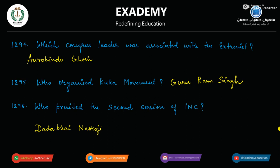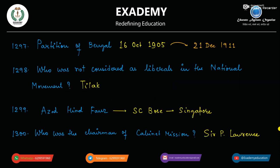Who presided over the second session of Indian National Congress? Dadabhai Naoroji. Partition of Bengal hua tha 16th October 1905, aur fir se repartition kiya gaya 21st December 1911.